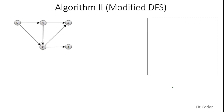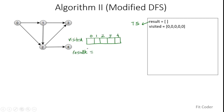Now let's look at the second algorithm for finding topological sort. This algorithm is a modified version of DFS. The data structures used are a result array to store the topological sort, and a visited array that tracks the nodes we have visited, initialized to 0. The algorithm uses recursion, as in DFS. The start vertex does not matter — we can choose any vertex. Let's choose 0.